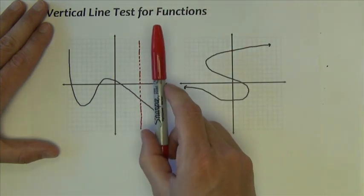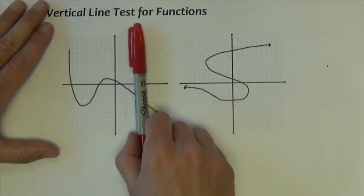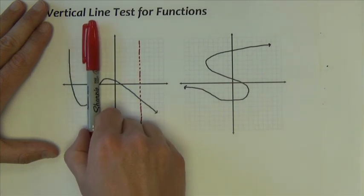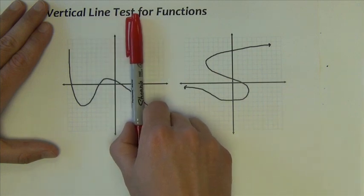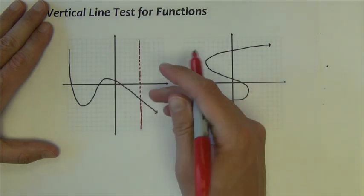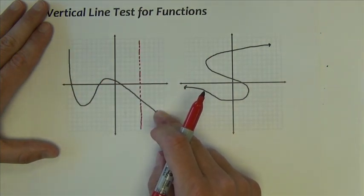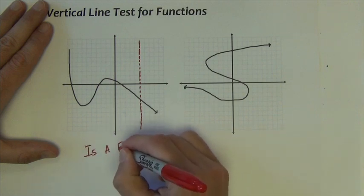And what you're going to do is you take this vertical line and you sweep it back and forth through the graph. In order for it to be a function, the vertical line can never hit the graph more than once. This vertical line would never touch the graph more than once as it goes from left to right. So this is a function.